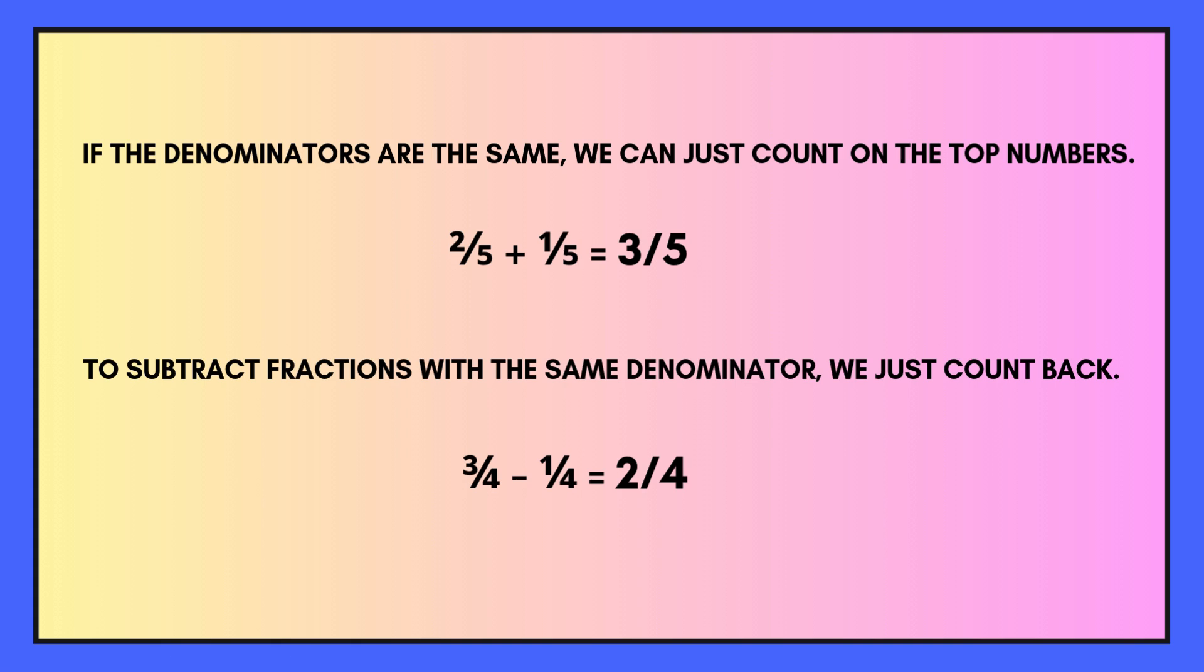To subtract fractions with the same denominator, we just count back. So we can see here we've got 3 quarters minus 1 quarter. All we need to do is 3 minus 1, which is 2, and we use the same denominator, which is 4, so it's 2 quarters.